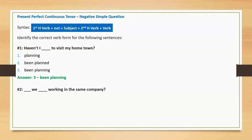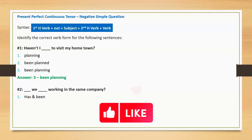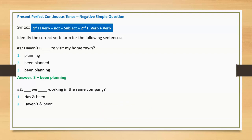Sentence two: 'Blank we blank working in the same company?' Option one: has and been. Option two: haven't and been. Option three: has and been. Correct answer: option two, haven't and been. Full sentence: 'Haven't we been working in the same company?'